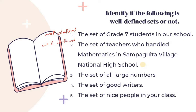Number three, the set of all large numbers. Number three is null set because large number could be infinite. Walang katapusan yung large number. Kung para sa'yo malaki na yung 1 million, sa iba, mas malaki pa yung 1 billion, so on and so forth. So hindi natin madidefine kung gaano kalaki yung large numbers.